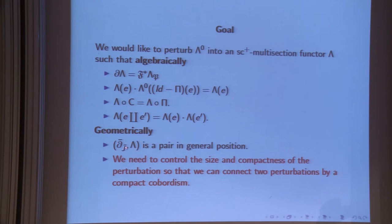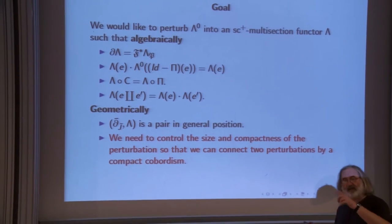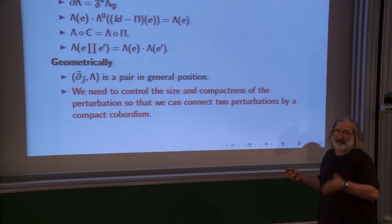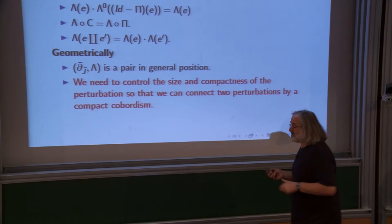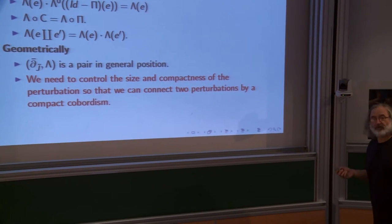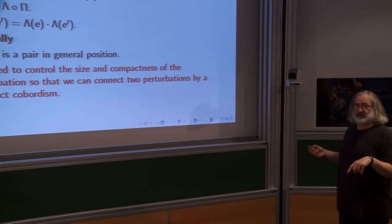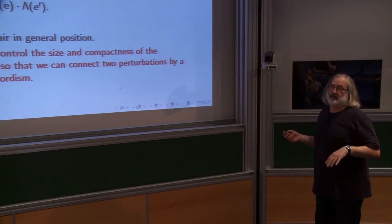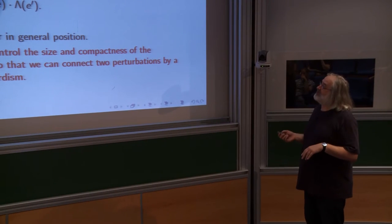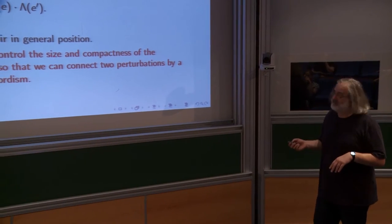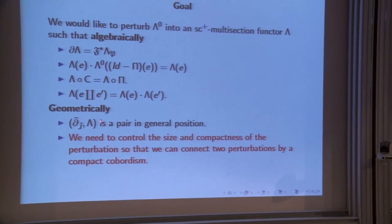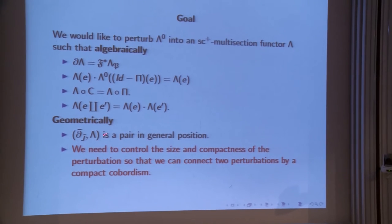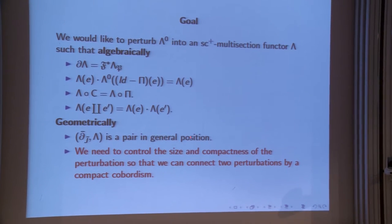If you think of this locally as a finite number of sections, you get a finite number of equations, and you want each of them to be in general position, which can be achieved. It cannot be achieved when you homotope from one perturbation to the other — you cannot in general achieve general position because of all the structures present. But when you just want to perturb, that's still possible.